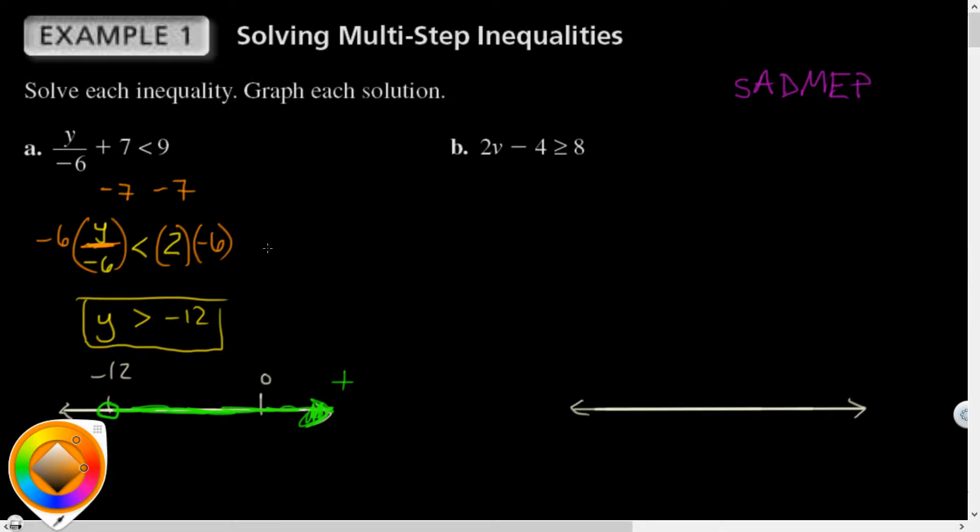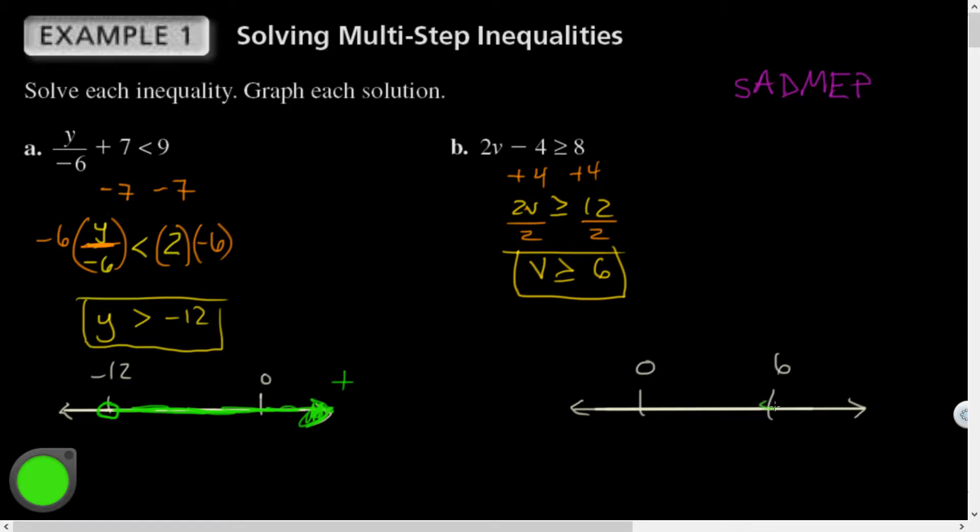Let's take a look at this one. Same idea. Solving skills coming back. You guys are going to be master equation solvers. So let's see. V is being multiplied by 2 subtracted by 4. Inverse operations. Let's deal with subtraction first. Add 4 both sides. I got 2V is greater than or equal to 12. I'm going to start cruising through these because you guys are experts. 2 times V so I divide by 2. Inverse operation multiplication is division. And I'll get V. Do I have to flip it? No because that was positive. So V is greater than or equal to 6.